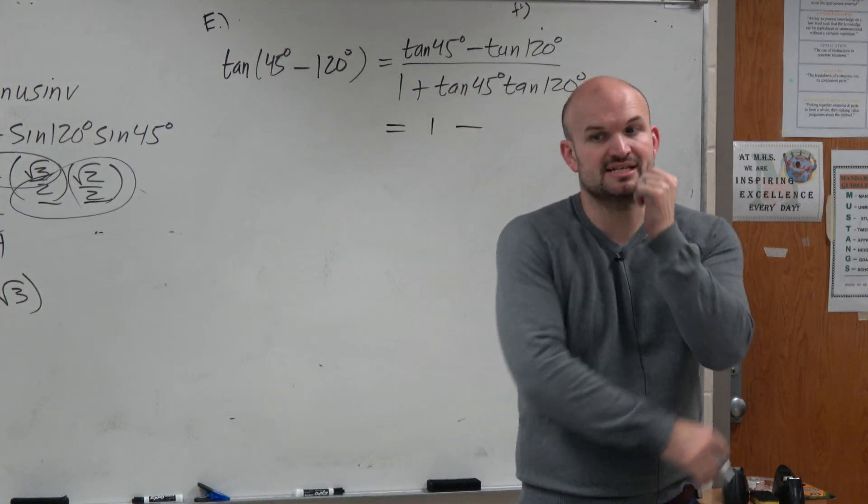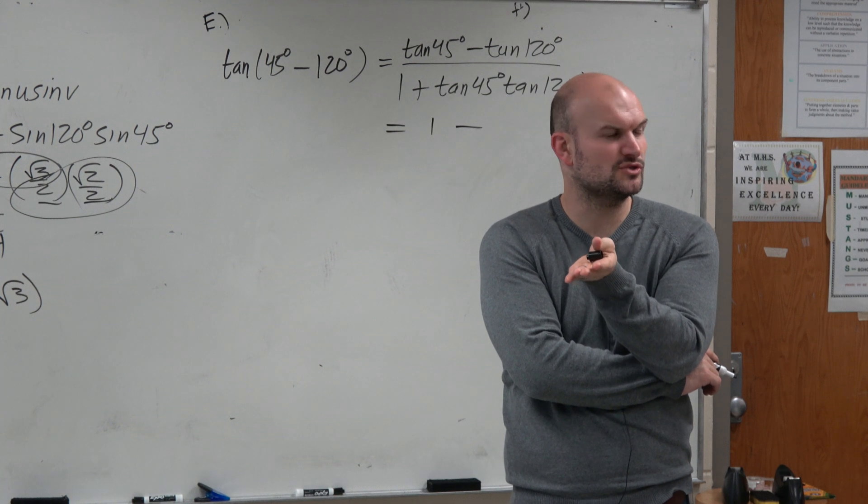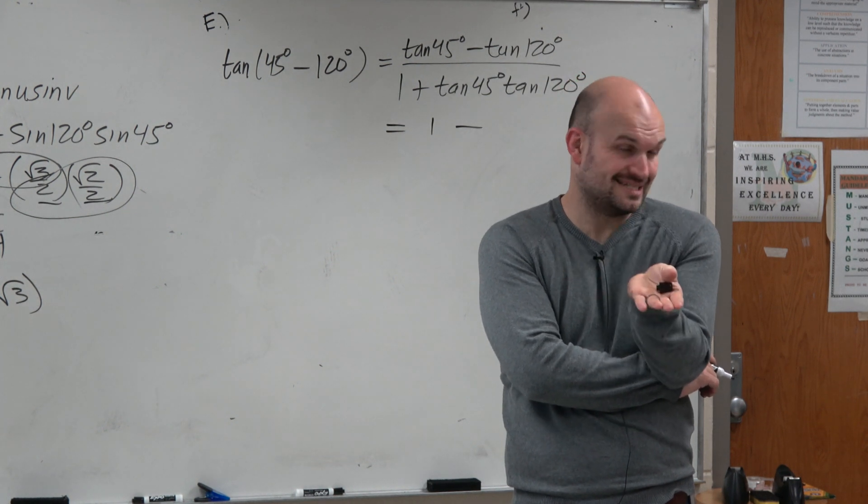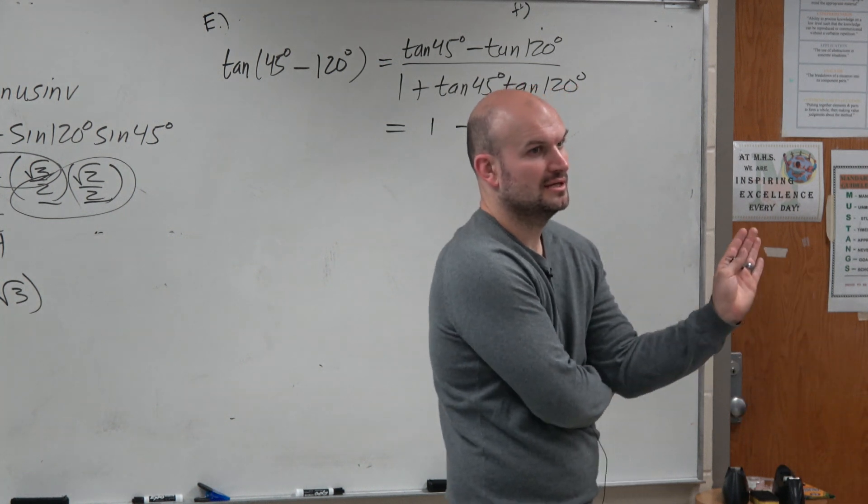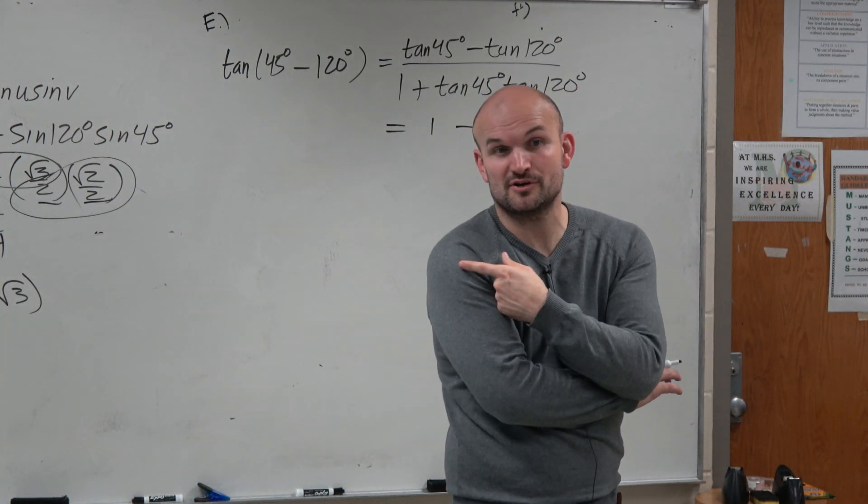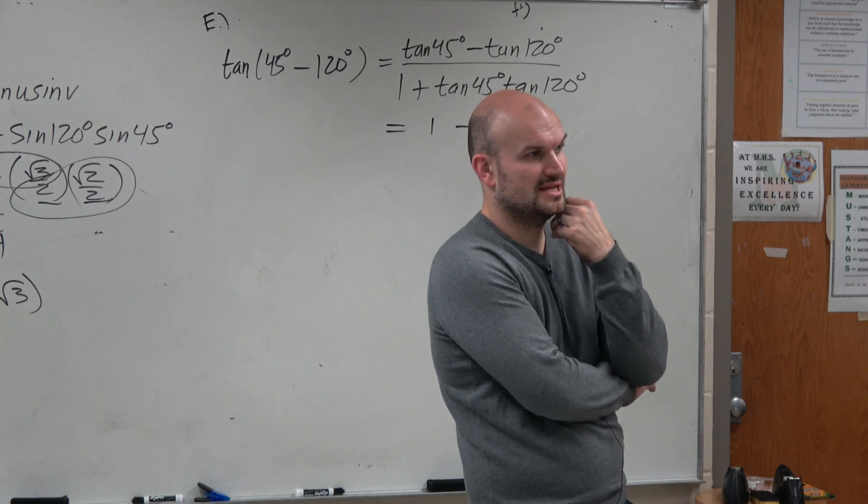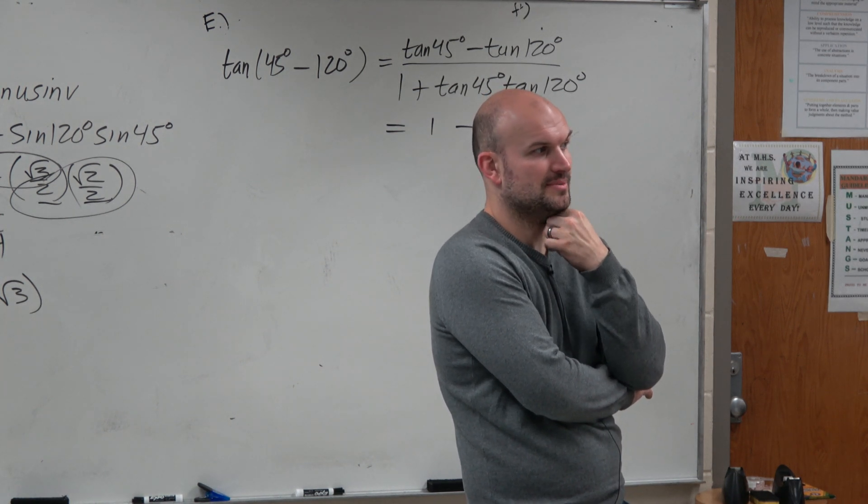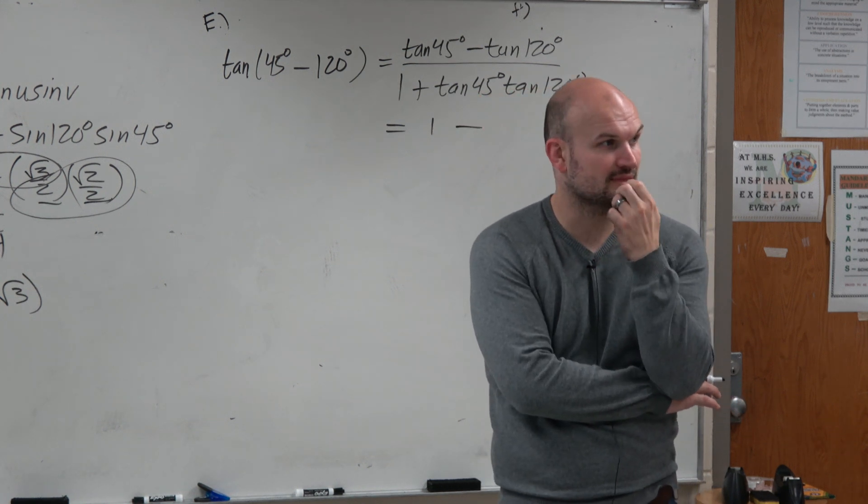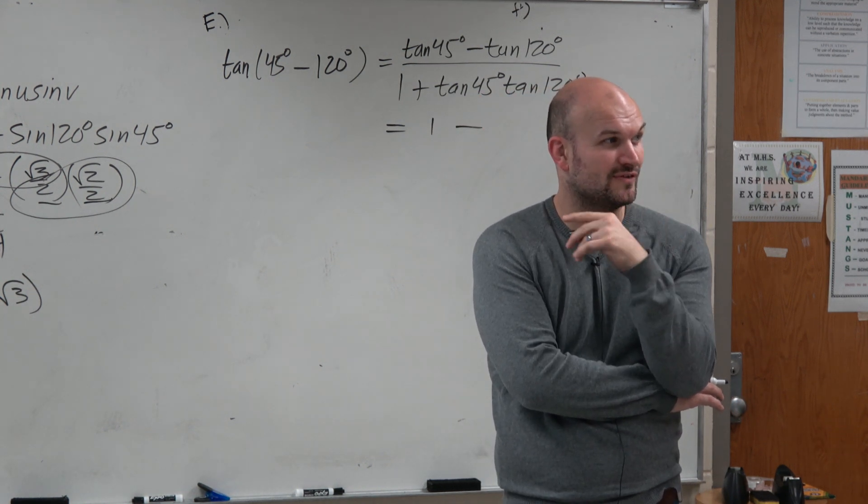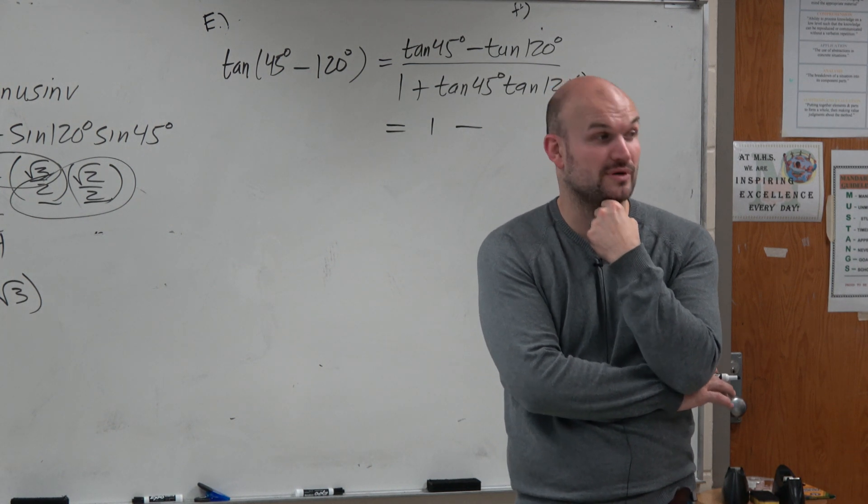Tangent of 120 degrees. So let's just think about what is the reference angle for 120 degrees? 60. So what is the tangent of 60 degrees? Does anyone remember that one? Well, we already did pi over 30 degrees. So what's the tangent of 30 degrees... I'm sorry. 60 degrees. Same thing as pi over 3. Y coordinate over x coordinate. Remember when I told you guys you'd need to know the unit circle for this chapter very well, it's square root of 3.